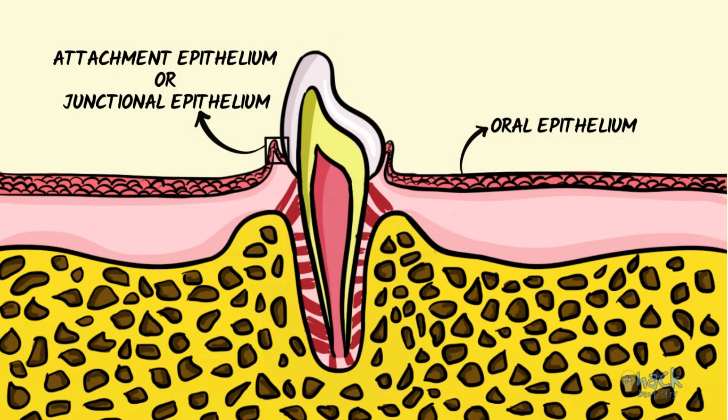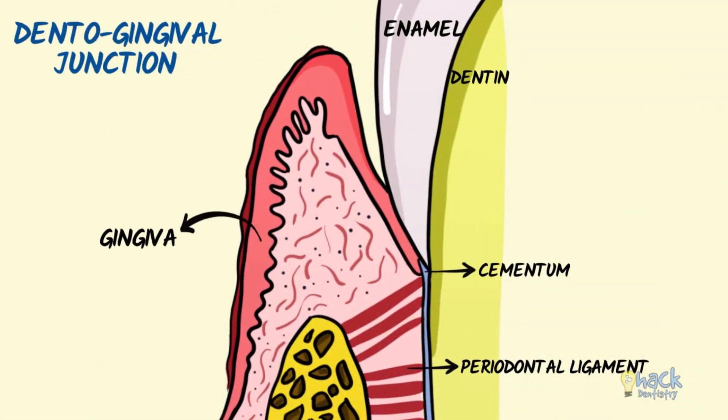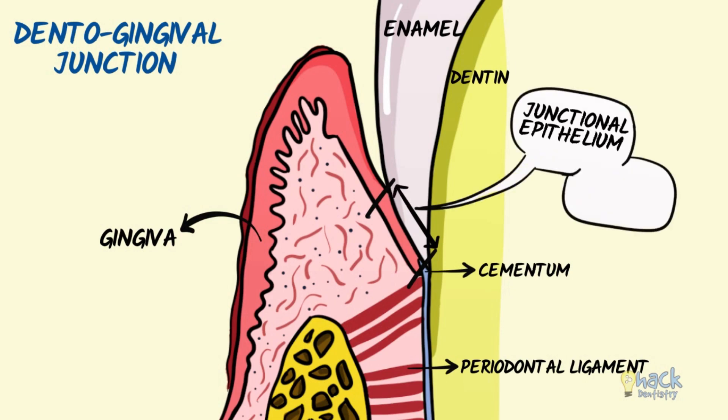Once the tooth is fully erupted, there is a dento-gingival junction that is established — a junction between the tooth and the gingiva. The junctional epithelium is attached to the tooth and forms a seal between the oral cavity and the underlying tissues.